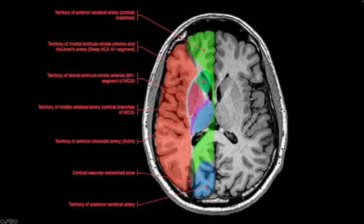Moving inferiorly still, the influence of the anterior cerebral artery starts to wane somewhat. The middle cerebral artery here in red. We can see a little bit of the posterior cerebral artery coming in here in blue in the kind of posterior parietal region. There are a bunch of these different vascular territories that are supplied by generally small or perforating branches off of the major vascular structures, which are probably not important for you to know at this point in your medical career.